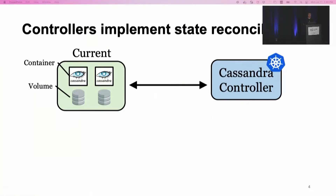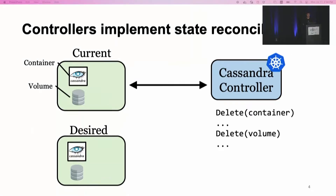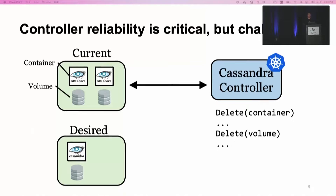To give you a concrete example, consider a controller that manages a Cassandra cluster on Kubernetes. The current cluster state contains two Cassandra replicas, each with one container attached with one data volume. To downscale this Cassandra cluster, we can specify a desired state that has only one replica. And to reconcile to this desired state, the Cassandra controller is going to delete one container and one volume. Clearly, controller reliability is critical, but it is also challenging to implement reliable controllers. These controllers run in highly dynamic and distributed environments where various faults like node crash and network disruption can happen at any moment. It is also challenging to address concurrency, asynchrony, staleness, and so on.